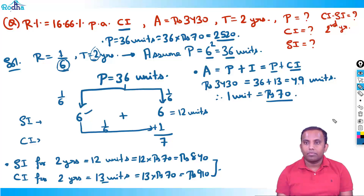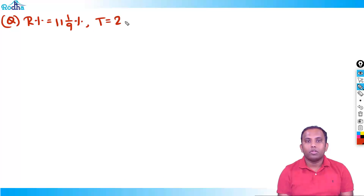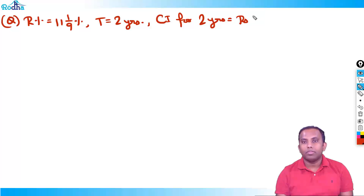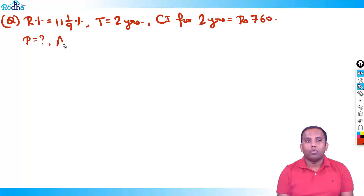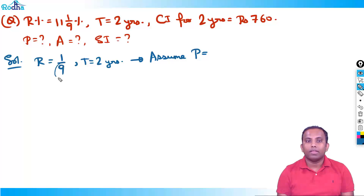We can solve one more question. Assume rate percent to be 11 and 1/9 percent. Assume time period to be two years. Total compound interest for two years is rupees 760. We can find principle, amount, SI, and difference between SI and CI. Rate is 11 1/9%, which is 1/9 in fraction form. Rate is 1/9, time is 2 years. So assume principle as 9 squared = 81 units.